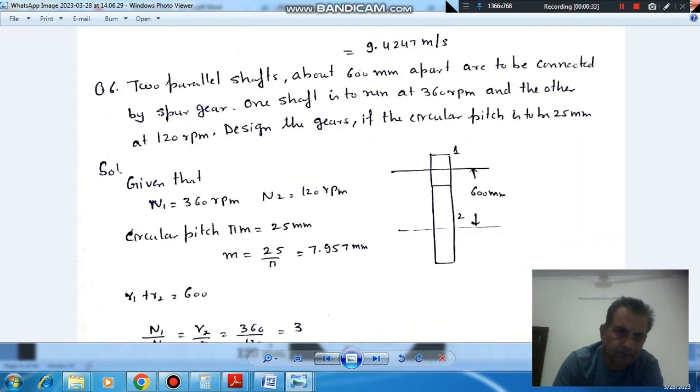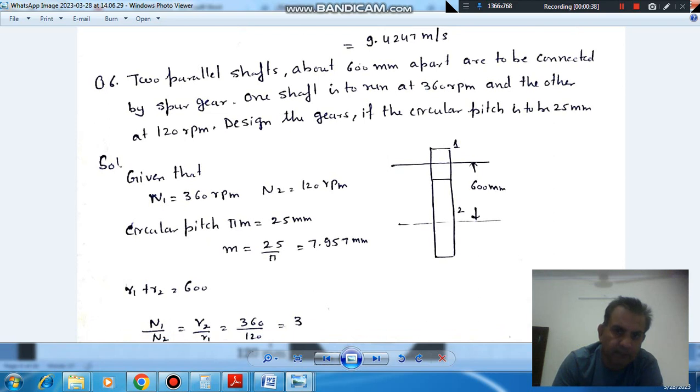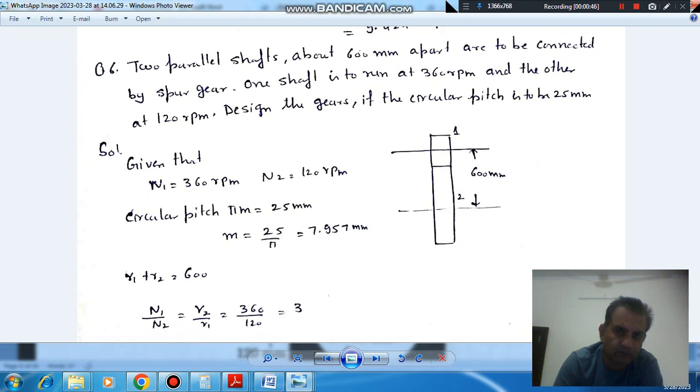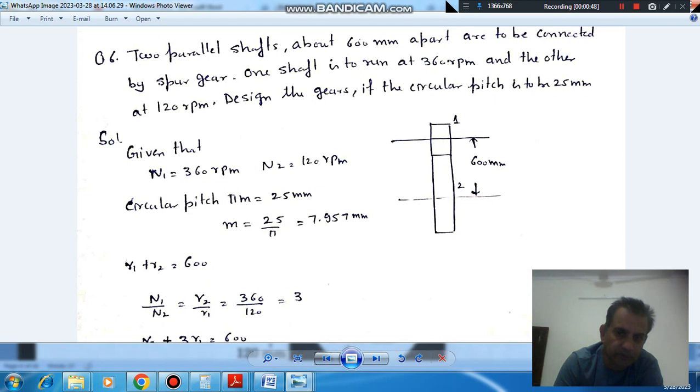So here, these are the two shafts and the center distance between them is 600 mm. One gear is rotating at 360 RPM and the other gear is rotating at 120 RPM. And circular pitch is given as 25 mm, so the module will be 25 by pi, which is approximately 7.95 mm.